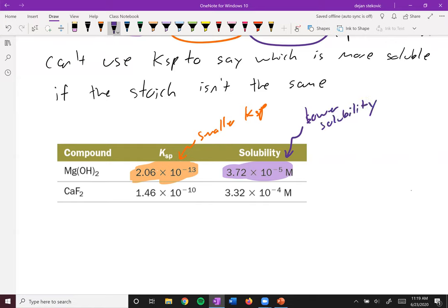And so in this case, we can just look at the KSP and tell which one is more soluble than the other. Because in this case, both KSPs, if you did an ice table, they would be equal to x times 2x squared.